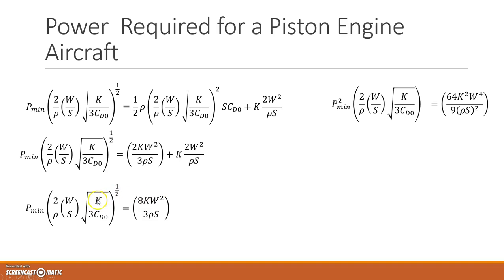And I haven't touched this side of the equation. So now what we're going to do is I'm going to square both sides. When I square this guy, I get rid of the half, and P min becomes P min squared. And when I square this guy, 8 times 8 is 64, K becomes K squared, W squared becomes W to the power of 4, 3 becomes 9, and rho S becomes rho S squared.